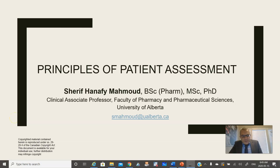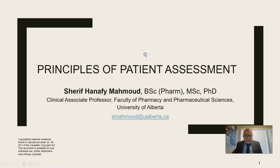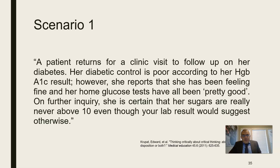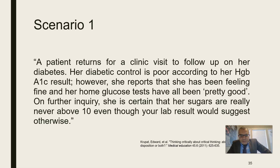Hello everyone, today we're going to go over the third section of Principles of Patient Assessment about clinical decision-making and symptom assessment. Let's start with a scenario: a patient returns for a clinic visit to follow up on her diabetes. Her diabetic control is poor according to her hemoglobin A1c result. However, she reports that she has been feeling fine and her home glucose tests have all been pretty good. On further inquiry, she's certain that her sugars are never above 10.